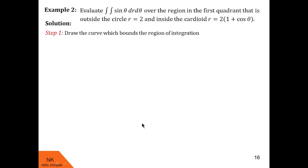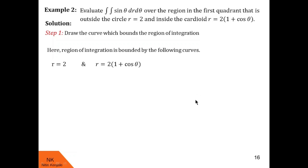Now let us go ahead to the next example. Here we are asked to evaluate the double integral of sinθ dr dθ over the region in the first quadrant that is outside the circle r = 2 and inside the cardioid r = 2(1 + cosθ). The region is bounded by these two curves; r = 2 is a circle.